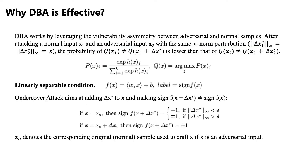Why DBA is effective? DBA works by leveraging the vulnerability asymmetry between adversarial and normal samples. After attacking a normal input X_1 and an adversarial input X_2 with the same infinity norm perturbation, the probability that Q(X_1) does not equal Q(X_1 + delta X_1*) is lower than the probability that Q(X_2) does not equal Q(X_2 + delta X_2*). We will analyze this in a linearly separable condition.